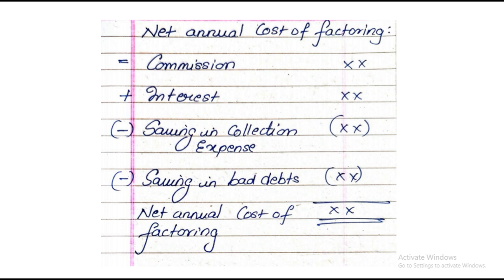Second, we need to find the net annual cost of factoring — what will be the cost incurred when you hire a factoring company? The formula is: commission charged by the factoring company, plus interest, less the saving in collection expense. If you hadn't hired a factor, you would have incurred those expenses, but now you save them. Less saving in bad debts — because we won't have bad debts, all things will be looked after by the factor company. So commission plus interest, less saving in bad debts and collection, gives you the net annual cost of factoring.